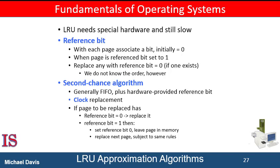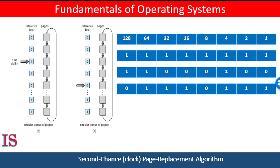One might ask when the reference bit is ever zeroed after the initial reset. It would be necessary to do so after some period, since all pages ever referenced would still be set to one. We can gain additional ordering information by recording the reference bits at regular intervals. We keep an 8-bit byte for each page in a table in memory. At regular intervals — say 100 milliseconds — a timer interrupt transfers control to the operating system, which sets the high-order bit to one, shifts all others to the right, and discards the low-order bit. These 8-bit shift registers contain the history of page use for the last 8 time periods.